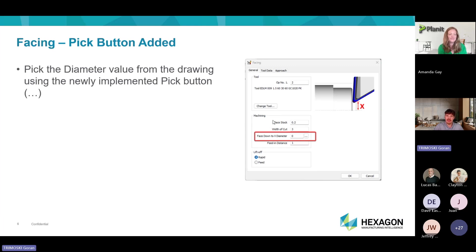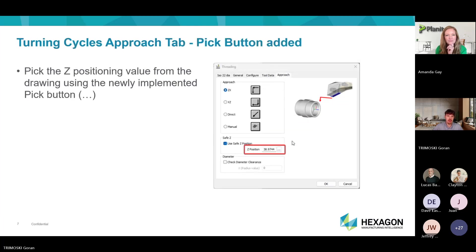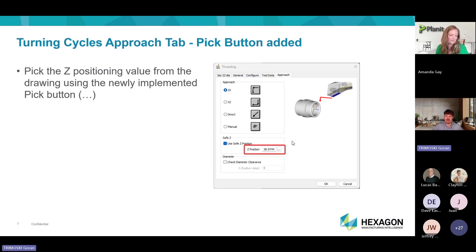We have that pick button set up in the facing command as well, so you could choose the diameter from the drawing there. And we put those pick buttons in the approach tab in the turning cycle. Again, these are all pretty much the same thing — you're just clicking on your part on-screen rather than having to manually input that value.